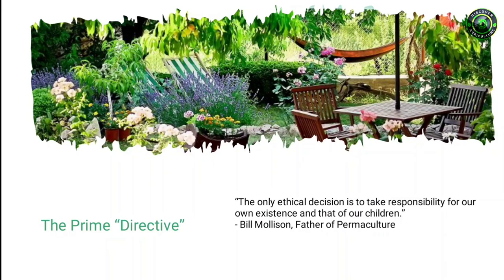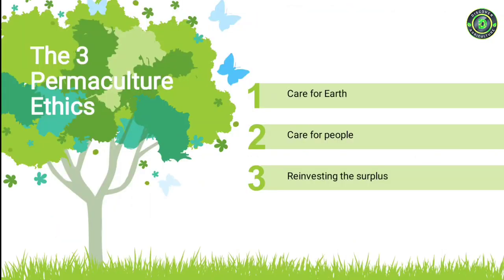Permaculture guides us through decision making. As long as we are doing our best to take responsibility for the needs of our own household, then we are living permaculture. How does permaculture work? Permaculture uses a set of three ethics and seven principles to connect people to the ecology and potential of a landscape.